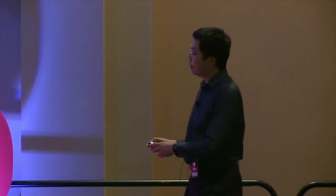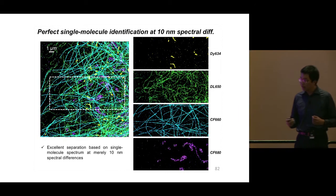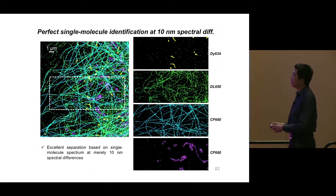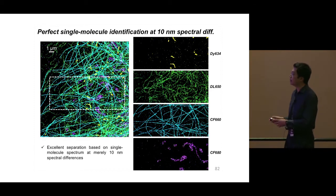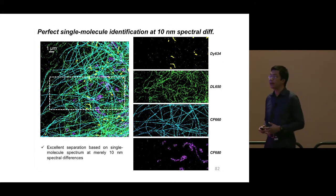Those four dyes are so similar in spectrum that with conventional bandpass filters their signals would overlap completely. But because we obtain the spectrum of each single molecule individually, we can easily identify which particular dye each molecule is. Even on this continuous color scale you can immediately see four distinct colors for the different targets. Using the full spectrum information of each single molecule, we achieve essentially zero color crosstalk between the different targets — perfect separation between those four dyes despite their heavily overlapping spectra.